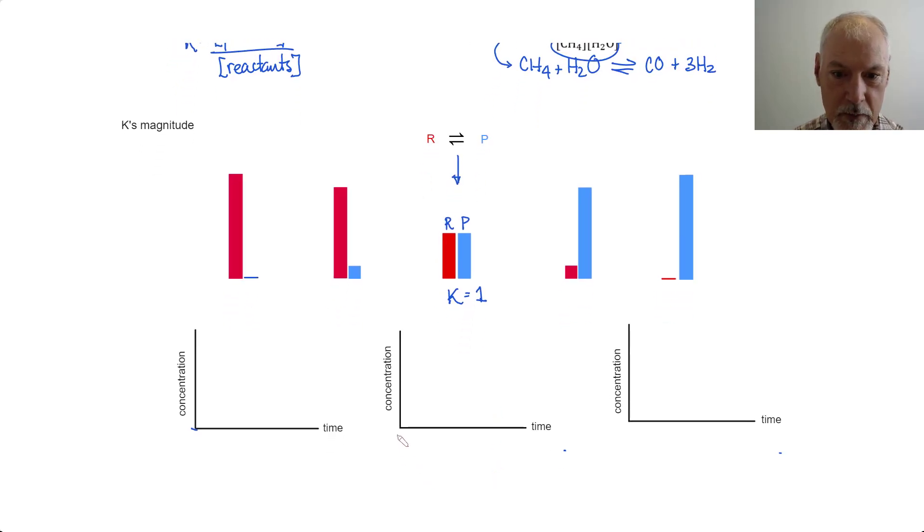Graphically, this would look the following way. If I begin with no product, I'll let the reaction proceed forward. It would eventually level off once I've reached equilibrium. At the same time, my reactant concentration would drop down and level off at the same amount. So, at equilibrium, I have equal amounts of product and reactant.